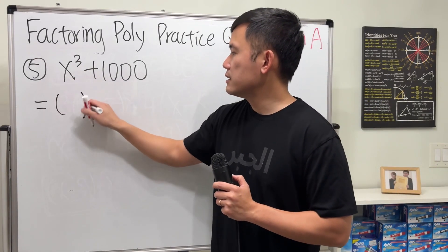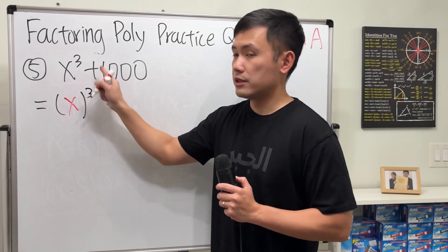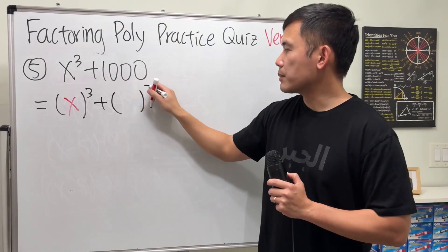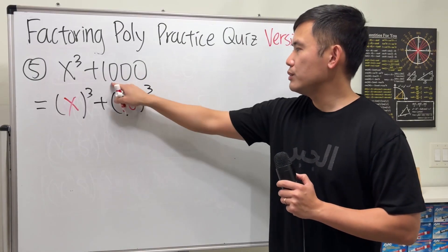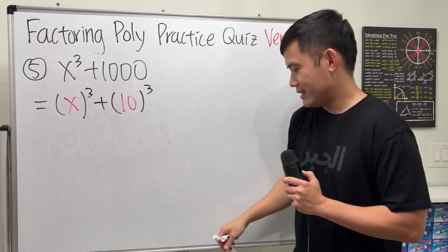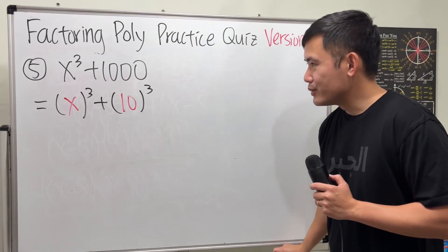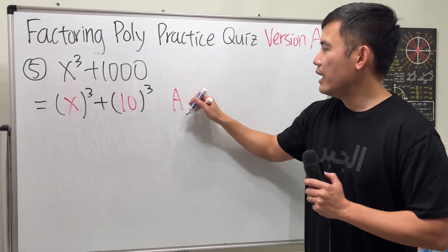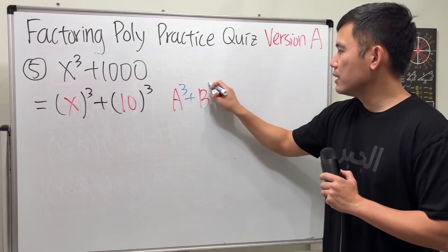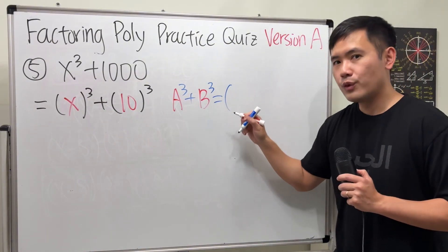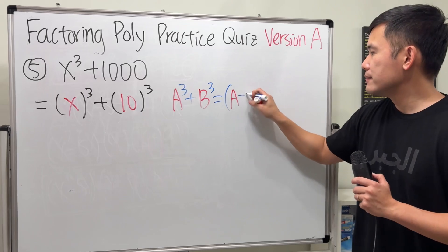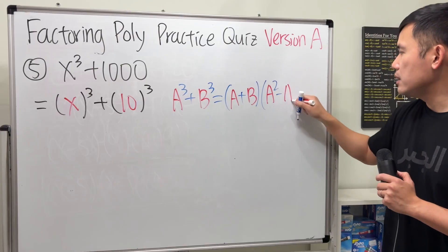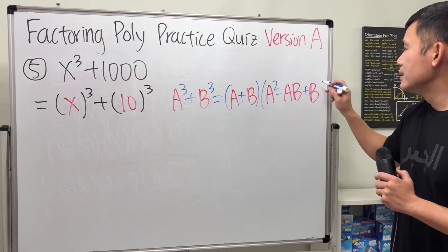First thing though, we look at this as just x to the third power plus the 1000 is what to the third power? The answer for that is 10, right? Three zeros, so we have 10 to the third power. Now, we are going to remember our formula for factoring a sum of two cubes and that is a cubed plus b cubed is equal to...